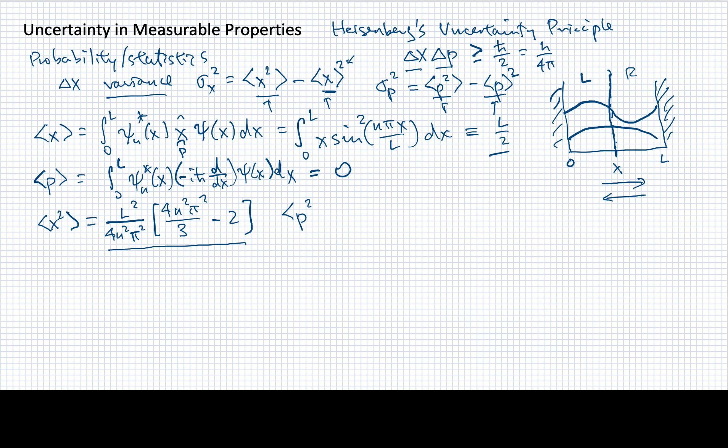Similarly, we could find the value for the expectation value for P squared. Now I'll point out that this one's a little bit easier because P squared is actually related to the energy. Remember that the particle in a box has a Hamiltonian operator that's just minus ℏ² over 2m times d²/dx². Or another way of saying this is that it's equal to 1 over 2m times the momentum operator squared.